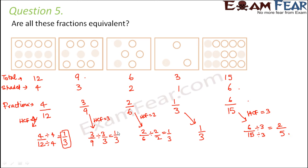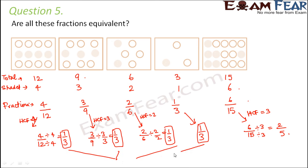Now look at the simplest form of each of these fractions — for 4 of them it is the same, that is 1 by 3. This shows that the first 4 fractions are equivalent, but the last one is not, because it represents 2 by 5, not 1 by 3. So the first 4 fractions are equivalent.